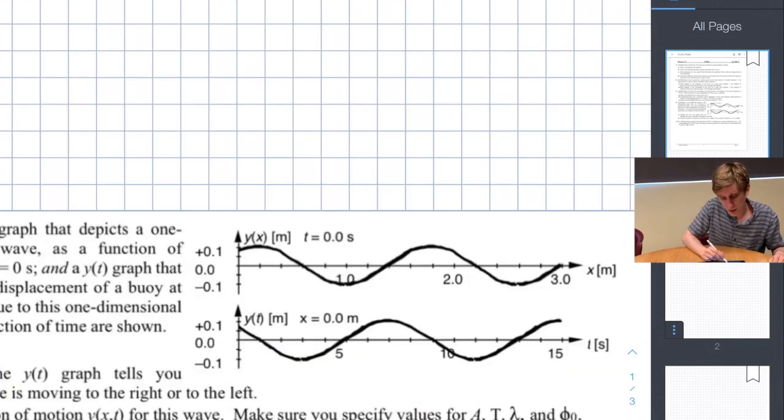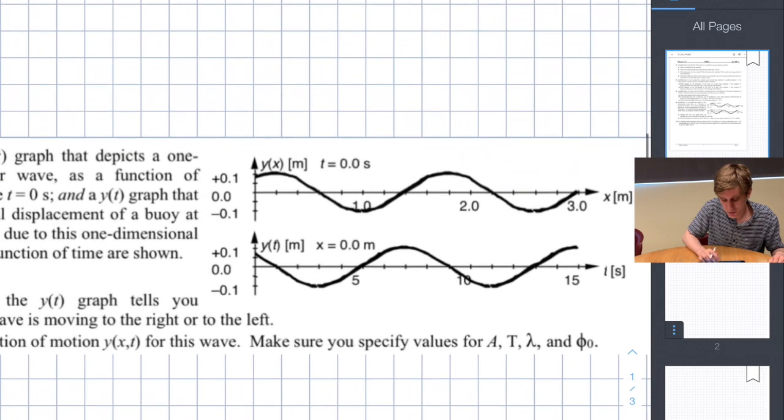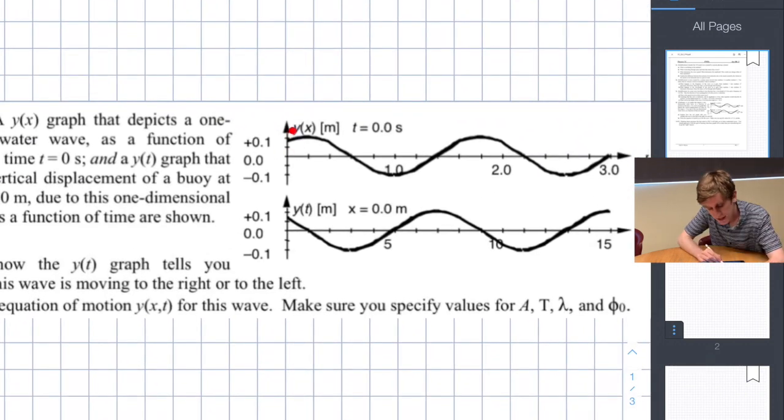According to this graph at time t equals zero the buoy is above the equilibrium point and headed downwards. In the y of x graph the buoy is situated right here at x equals zero. So let's use this information to solve this problem. Let's imagine that the buoy is sitting here and the wave is moving to the left as time passes. If the wave was moving to the left as time passes the buoy would have to start by going up to the top of the crest before it could go back down into a trough.